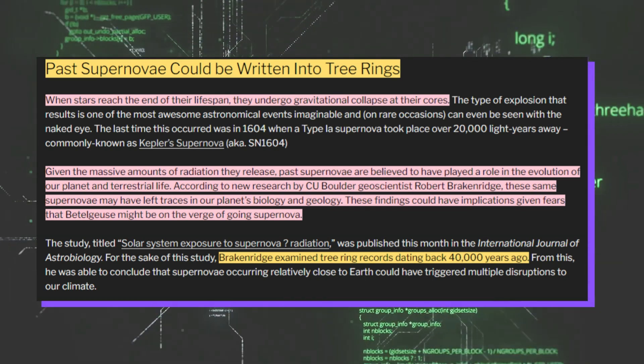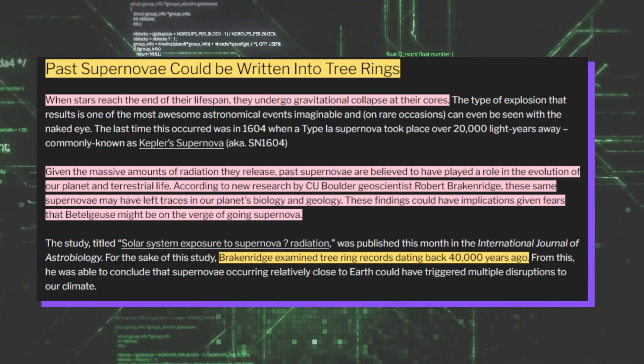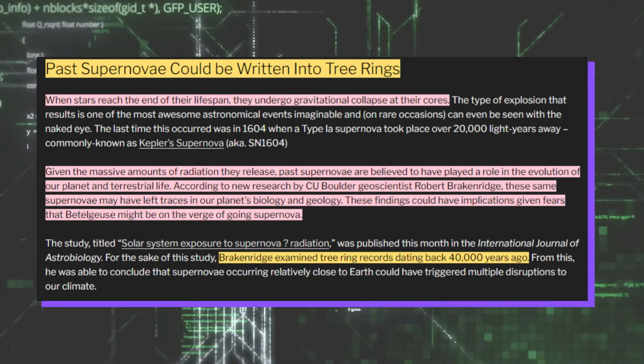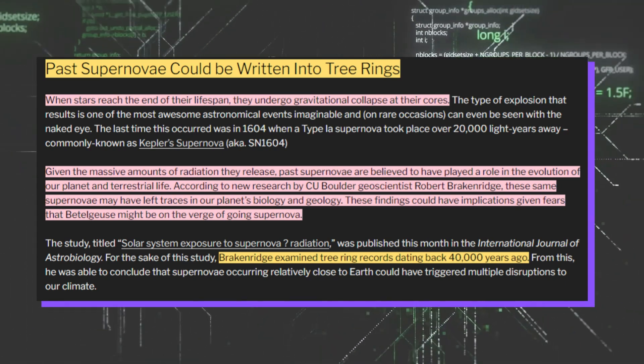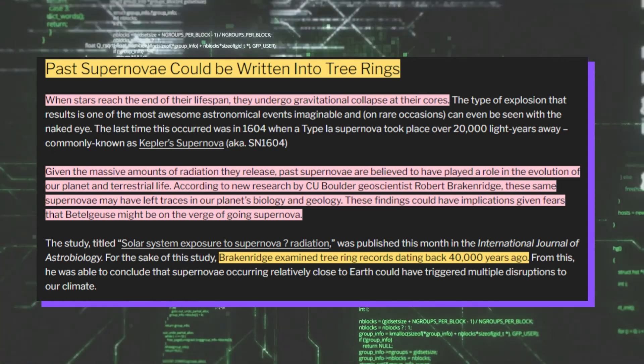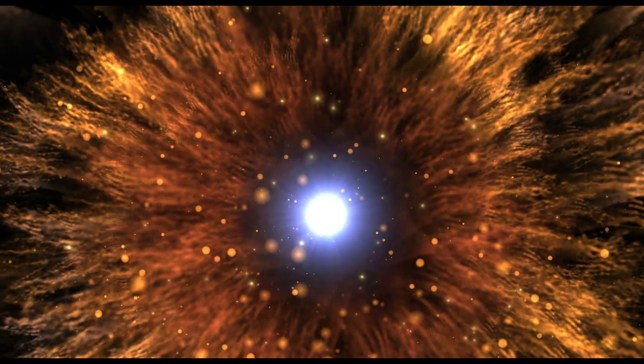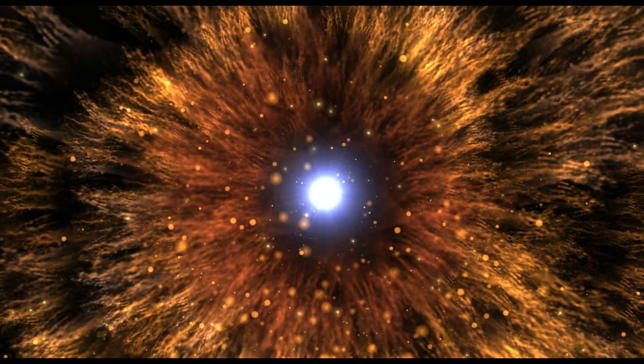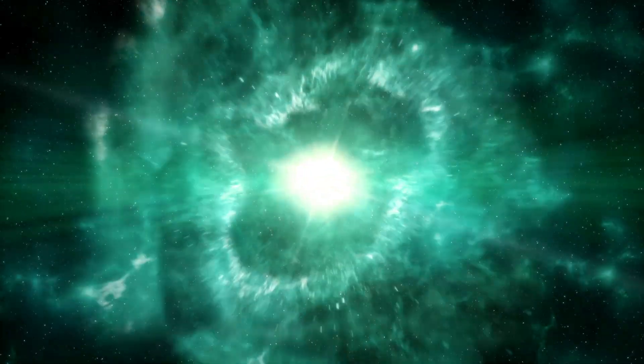Breckenridge and his colleagues checked the record books. They compiled a list of known supernova over the last 40,000 years. They were able to trace the supernova through the nebulous supernova remnants they left behind. Then, they compared this list to the record of radiocarbon spikes and tree rings from the same period.